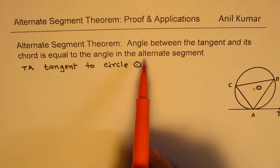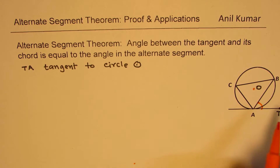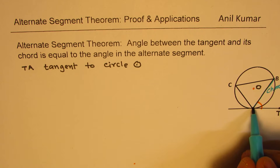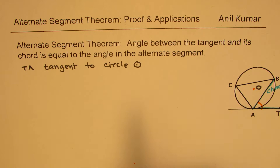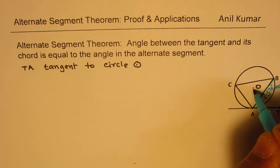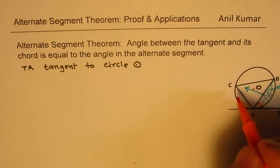When we say alternate segment theorem, it means the angle between the tangent and its chord is equal to the angle in the alternate segment. It's very confusing to figure out which is the alternate segment, so let me give you an example. This is the angle between the tangent and the chord — that is a chord, and this is the tangent. The angle between chord and tangent is what we're talking about. Now look at the segment, and look at the angle in the triangle right opposite — that is the alternate segment.